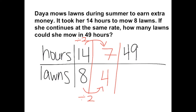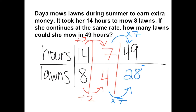Now to get from 7 to 49, we multiply by 7. So we do the same to the number of lawns and multiply by 7, giving us 28 lawns in 49 hours.